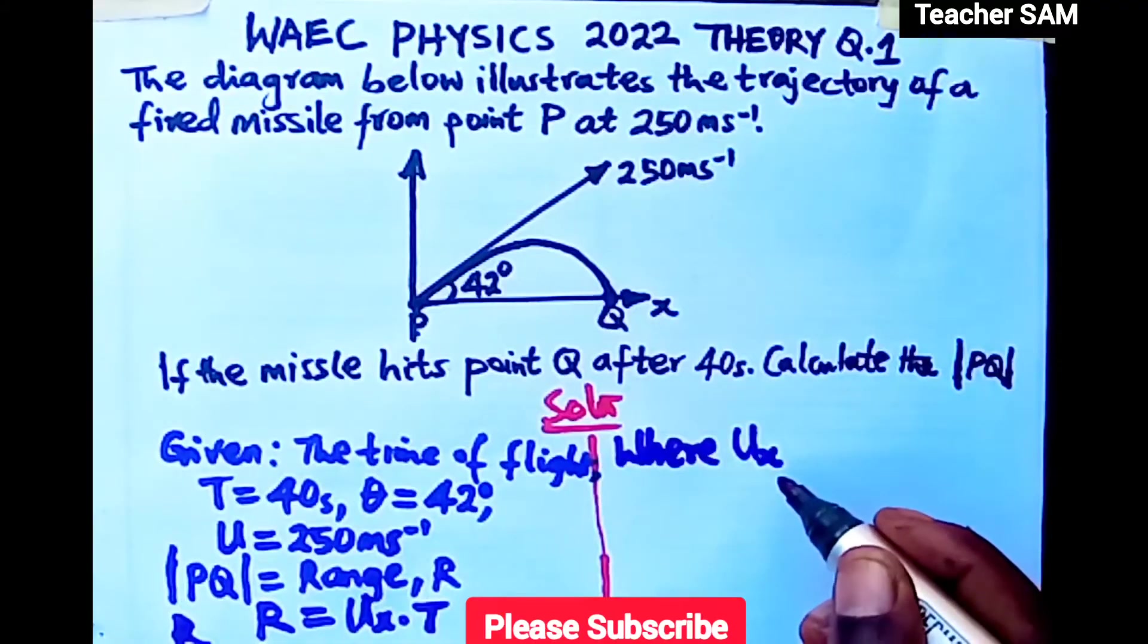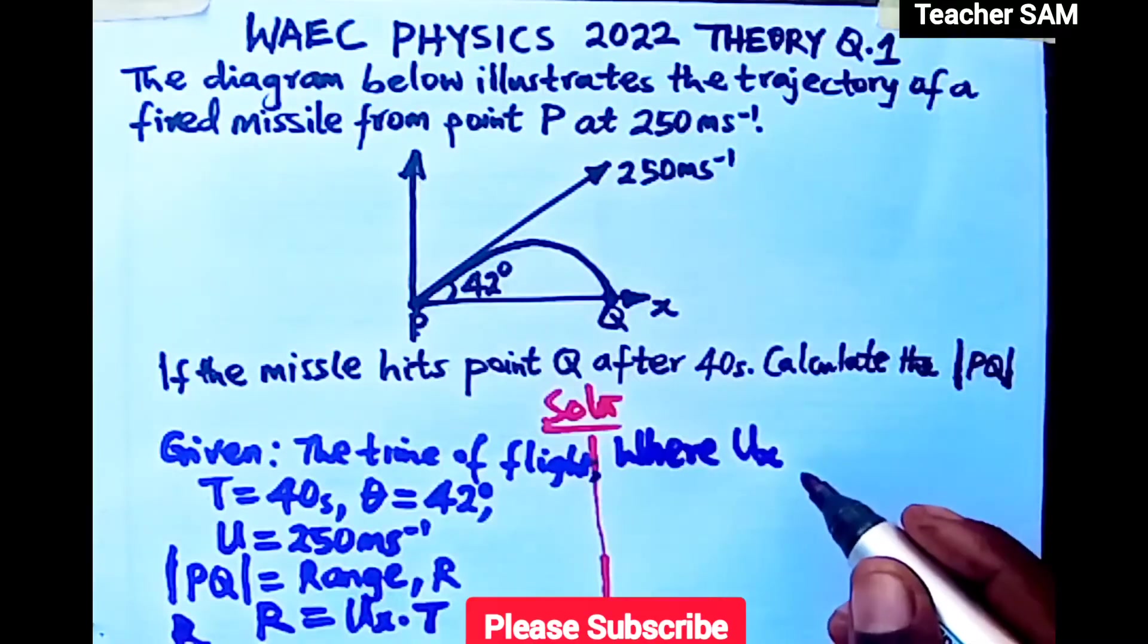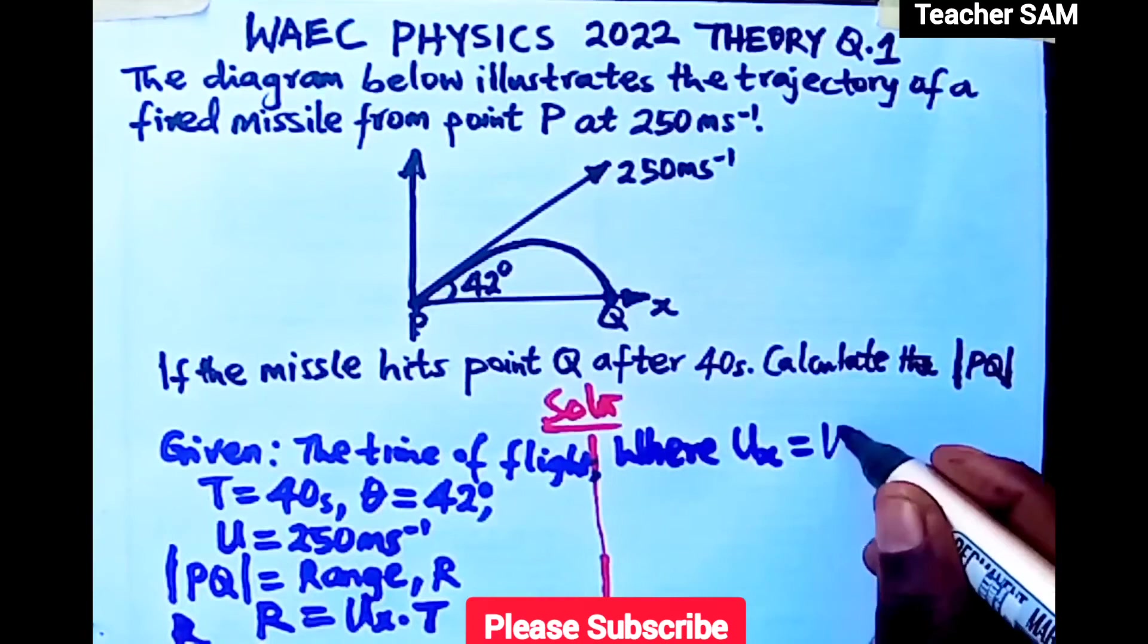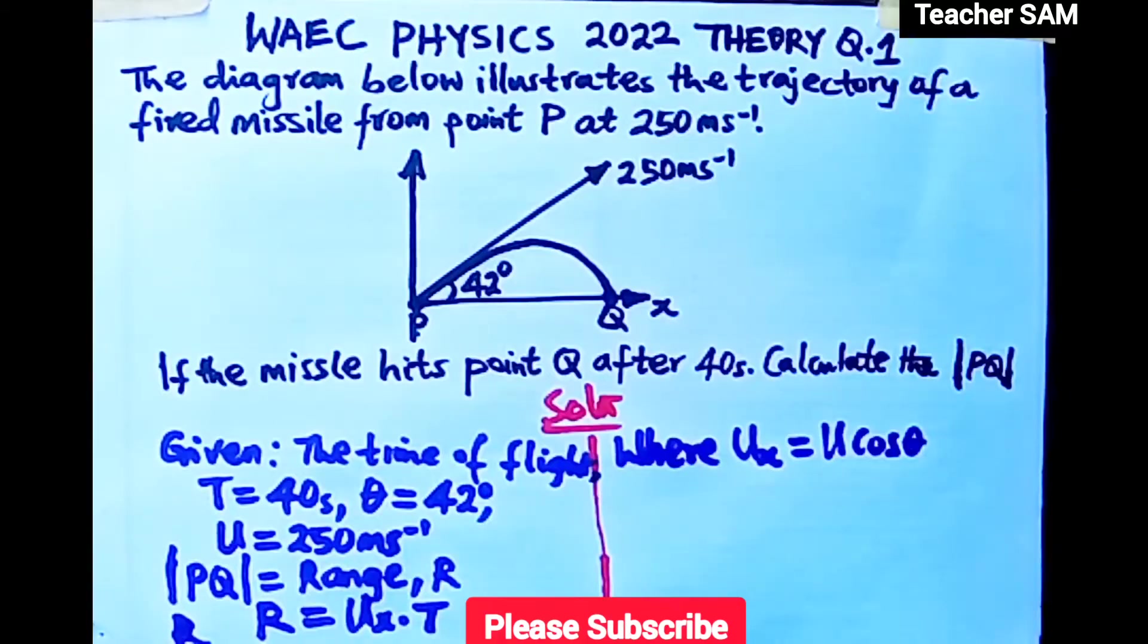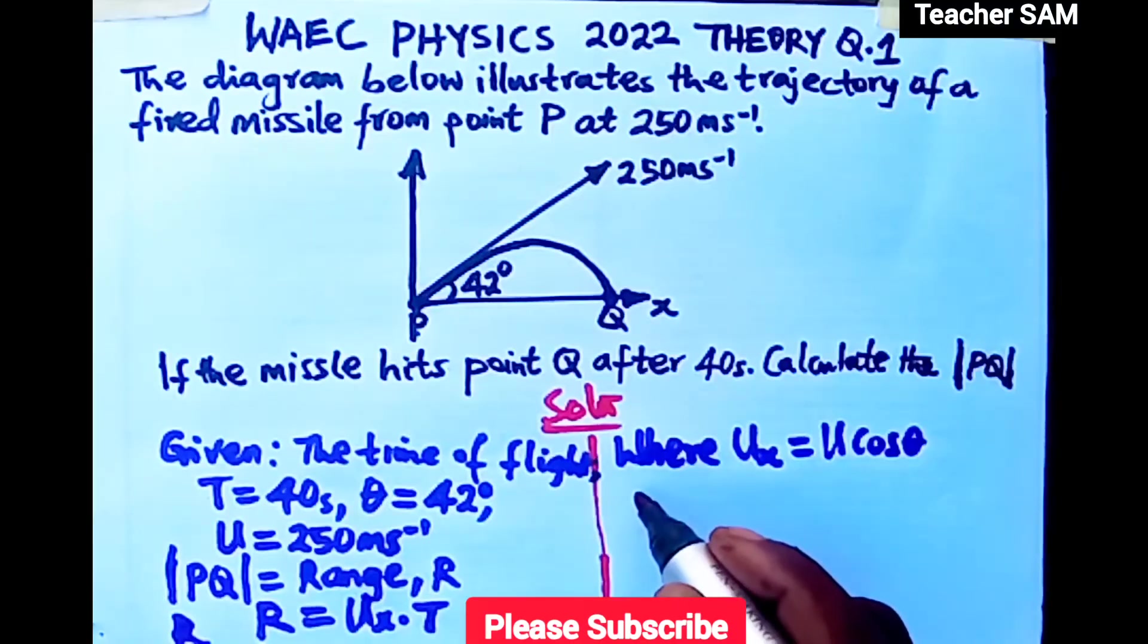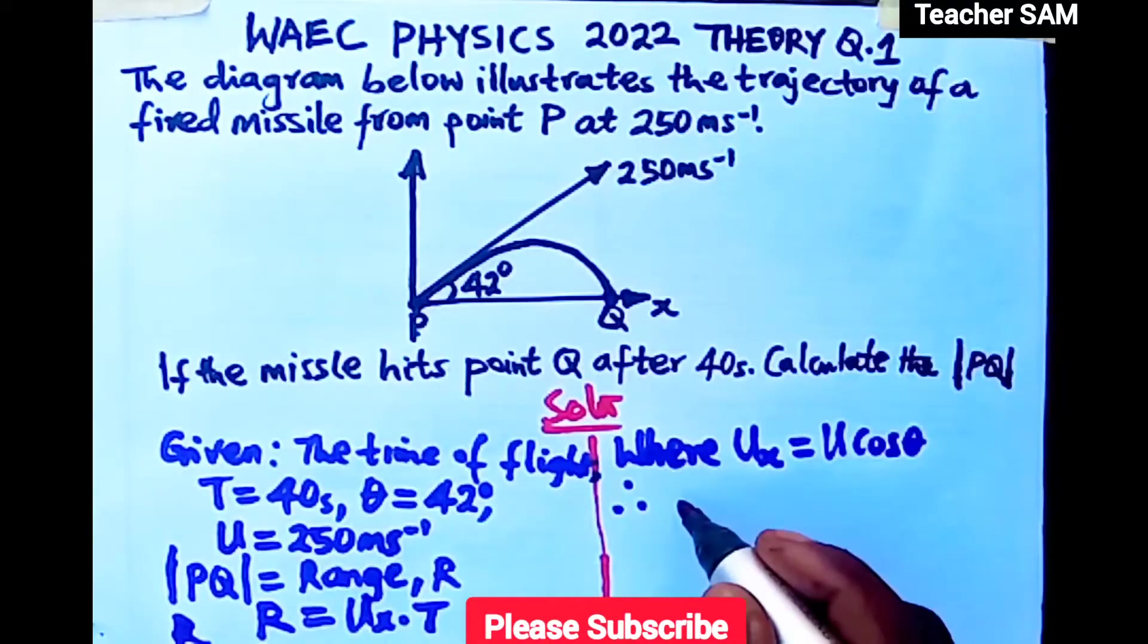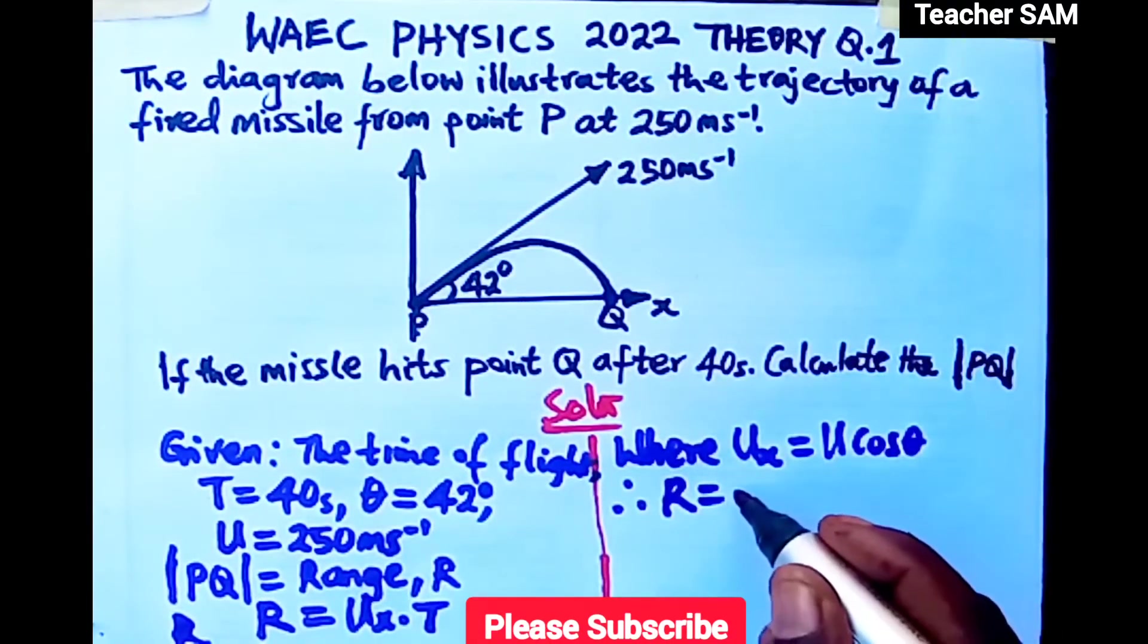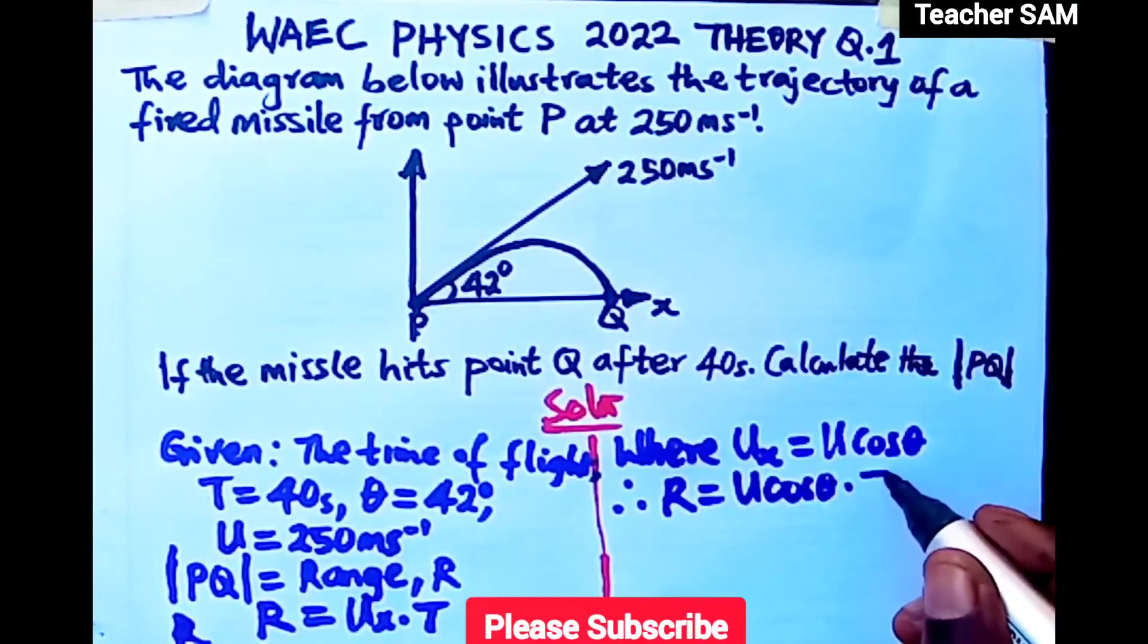If you did projectile motion well, you must have come across this. Now, since Ux equals U cos theta, our range R, which equals line PQ, equals U cos theta times T.